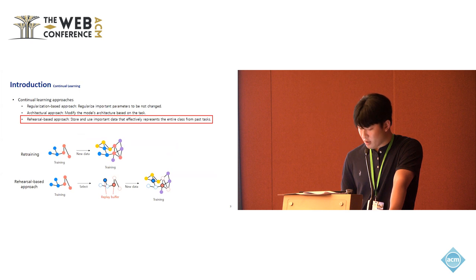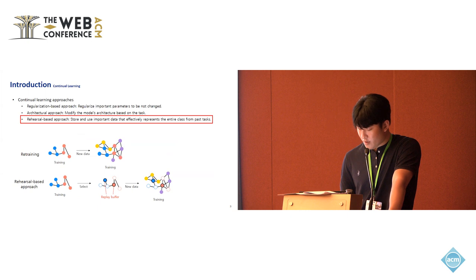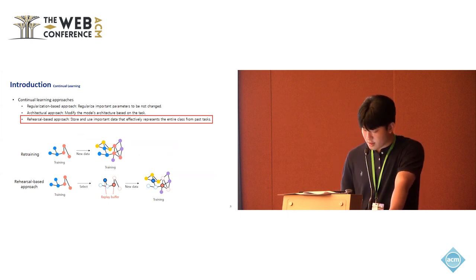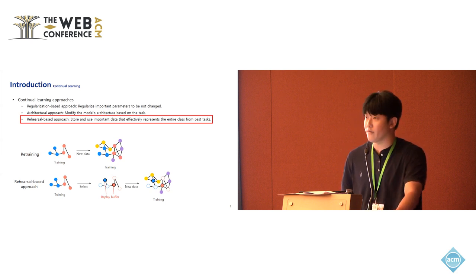Continual learning is primarily investigated through three main approaches. Among these, rehearsal-based approach is known to exhibit the best performance, which we adopt in this research. In the case of retraining, the model is trained for all nodes when new data is introduced. In contrast, a rehearsal-based approach selects a subset of nodes, which is called replay buffer, to train along with the newly introduced training set as illustrated in the below figure. Hence, the main challenge in this approach lies in selecting a representative replay buffer effectively.